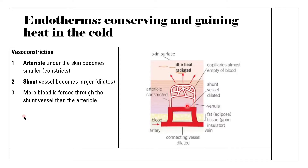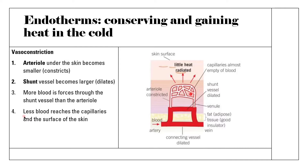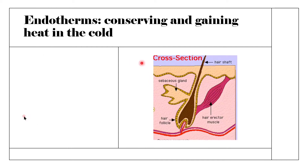As the shunt vessel dilates and the arteriole constricts, more blood is forced through the shunt vessel rather than up to the surface. This means less blood reaches the capillaries on the surface of the skin, so less heat can be radiated from the skin. Because there is less blood for heat to be lost from, less heat is lost and heat is conserved in the cold.